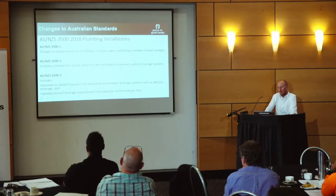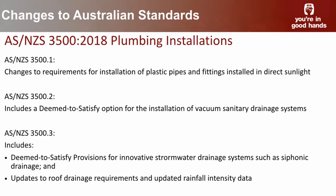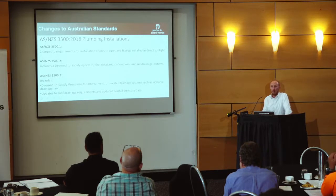There have been a few changes to the plumbing standards. One requirement in AS 3500 Part 1 is changes to the installation of plastic pipes and fittings in direct sunlight. Changes also include a deemed-to-satisfy option for vacuum drainage systems, which is really more in a commercial setting. AS 3500 Part 3 captures siphonic drainage, again more in a commercial setup, but there have been a number of changes to the roof drainage requirements and updated rainfall intensity data. The code had put in overflow from eaves gutters provisions a few years ago but hadn't updated AS 3500 Part 3 at the time — that's now been updated.